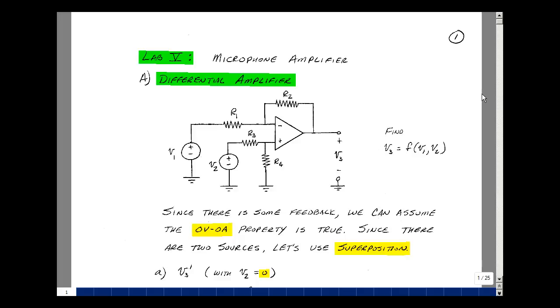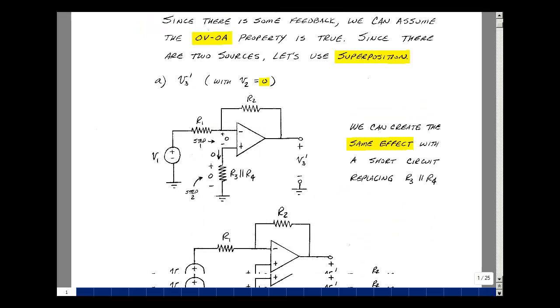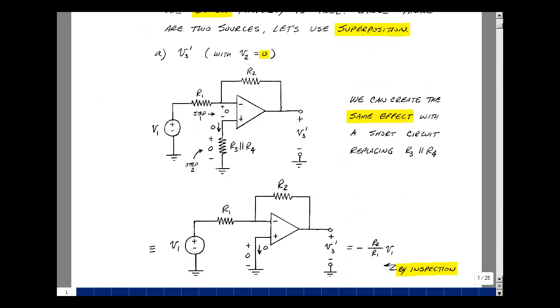I have two voltage sources, so I can use superposition because this is a linear circuit. Let's first set voltage V2 equal to zero, and I'll call V3 due to that source as V3 prime. The resistors R3 and R4 are in parallel. The current flowing here is zero because of the zero current of the op-amp. That's going to create a voltage of zero.